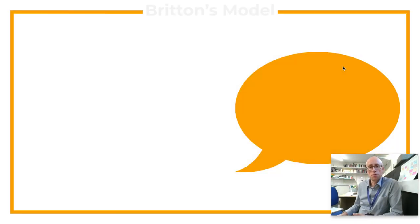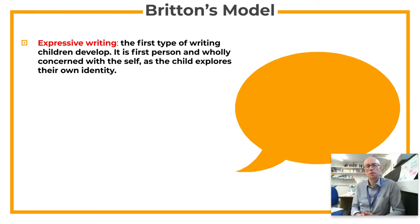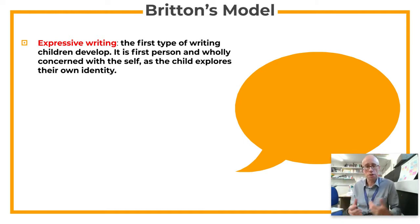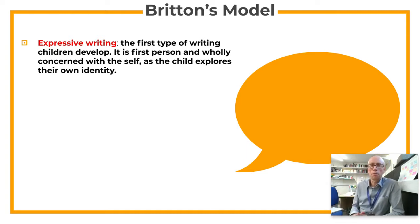Now we move on to Britton's model. He splits early writing by children in primary schools down into three constituent parts. The first stage he identified was expressive writing — this is really the first type of writing that children tend to develop, in the crawls preparatory and consolidation stage. It tends to be first person and concerned with the self, because at this stage the child is essentially exploring parts of their own identity, something with which Jean Piaget would concur, because in his sensory-motor and preoperational stage, it's all about children being egocentric.